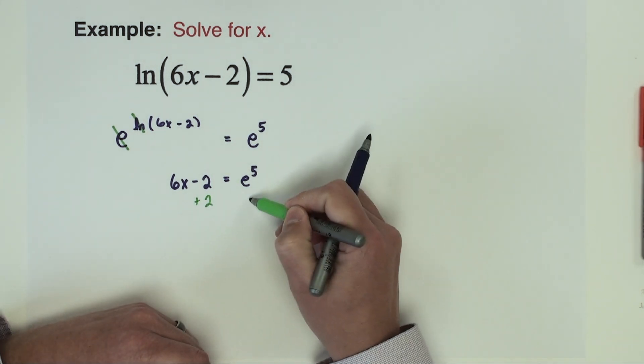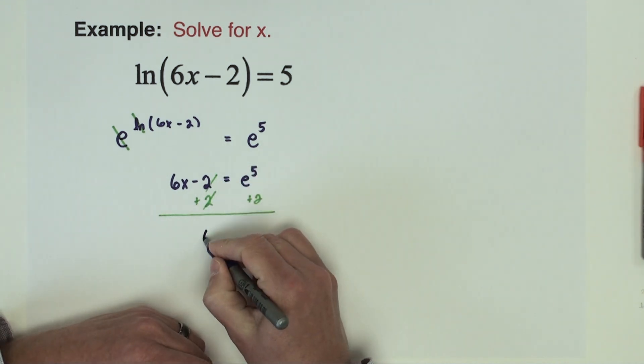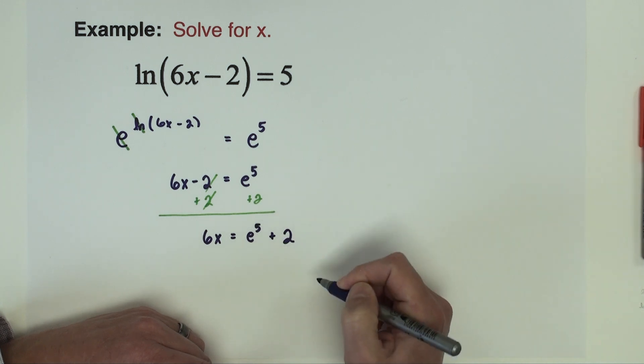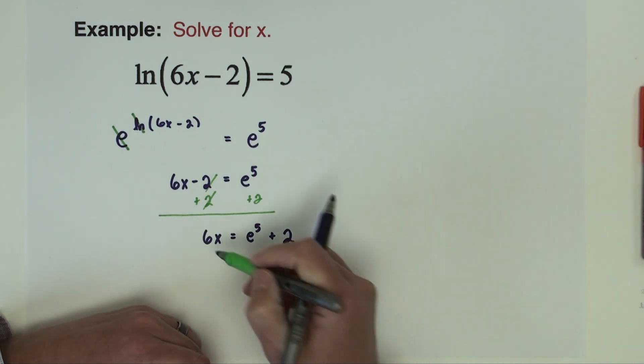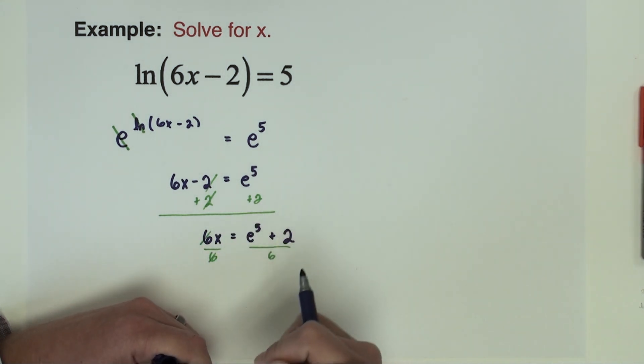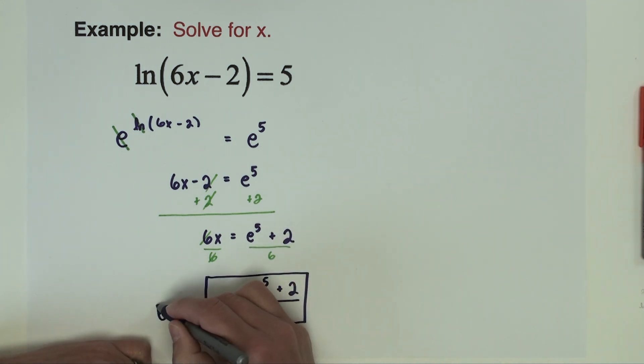We're going to add 2 to both sides. So I've got 6x equals e to the fifth power plus 2. And we're going to divide both sides by 6. So x is going to be e to the fifth power plus 2 divided by 6. That is our exact answer.